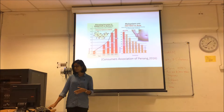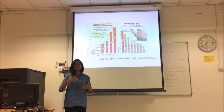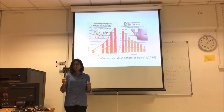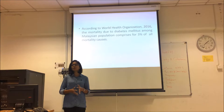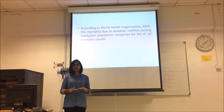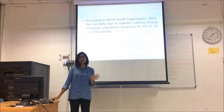My problem statement is that in Malaysia there is an alarming increase in diabetes. It is increasing too rapidly year by year, and as you can see, it has increased about 3% compared to 2016. According to the World Health Organization 2016, mortality due to diabetes mellitus among all causes of mortality is 3% for the Malaysian population. So it is an alarming condition in Malaysia.